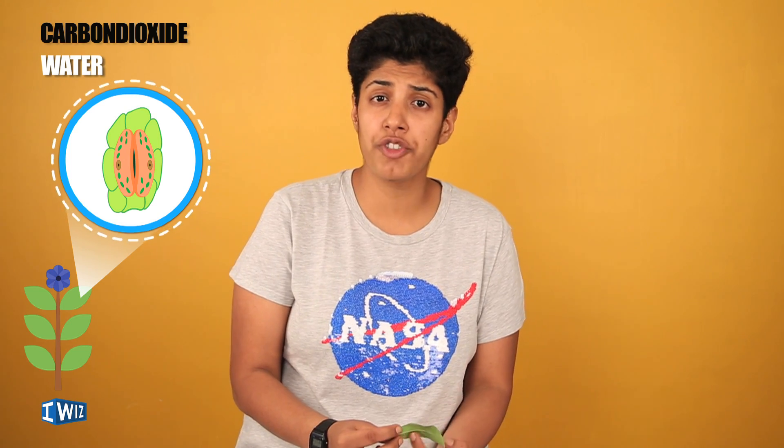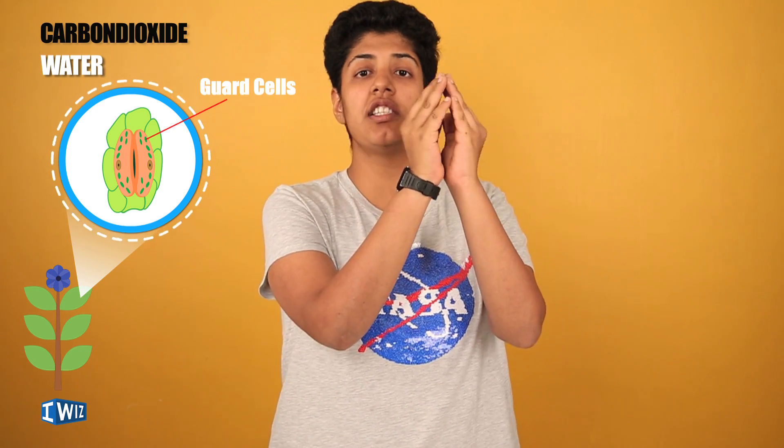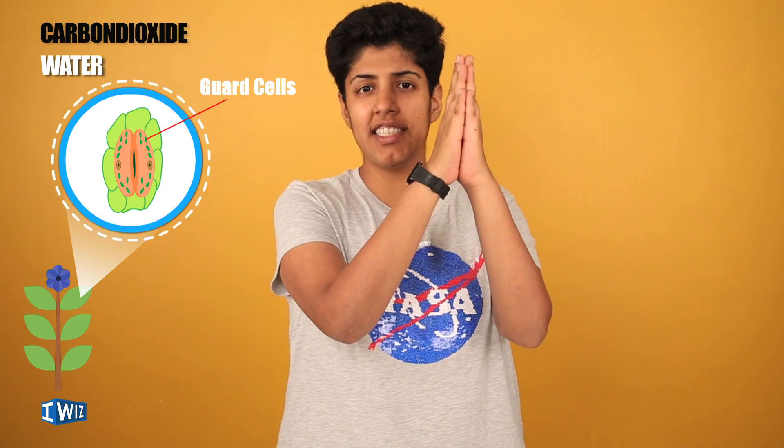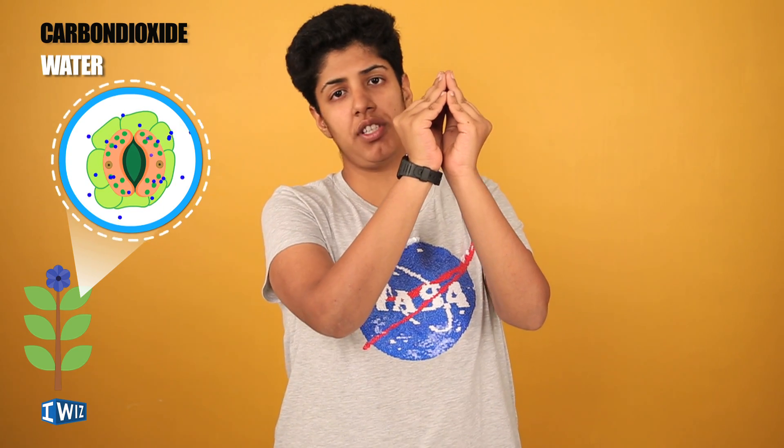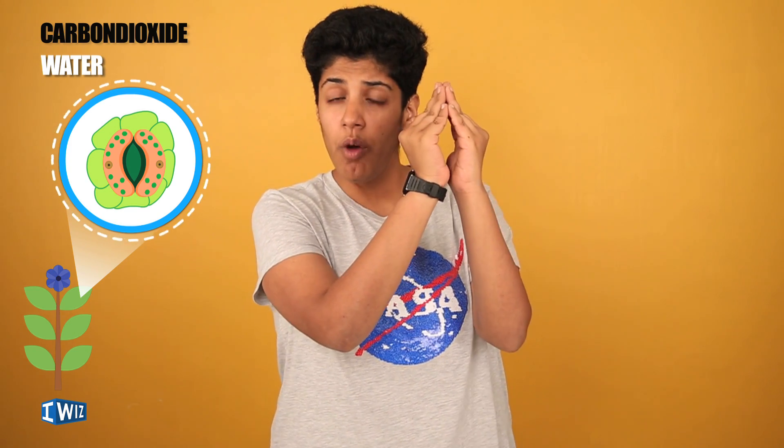The two things plants really need for photosynthesis are carbon dioxide and water. Carbon dioxide is taken in by stomata, which are found on the leaf — mostly on the lower surface. Stomata are openings surrounded by guard cells. When the guard cells don't have much water they are flaccid and the stomata is closed. When the guard cells have water, it causes the opening to open up. This is the basic mechanism of how stomata opens and closes.